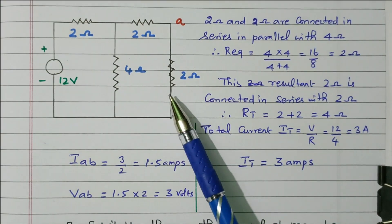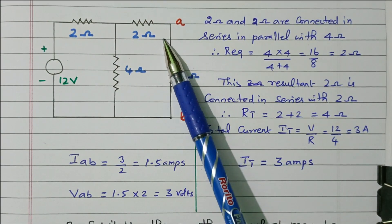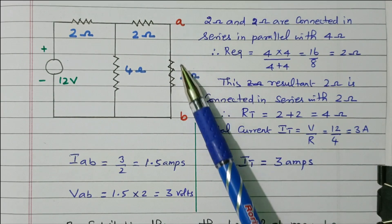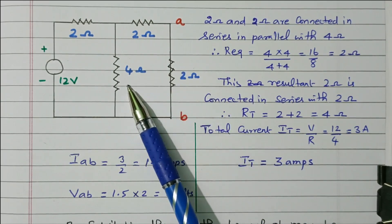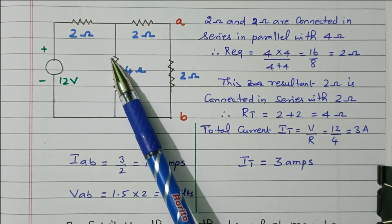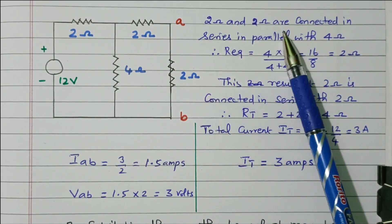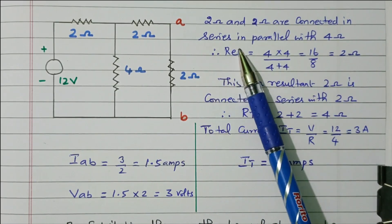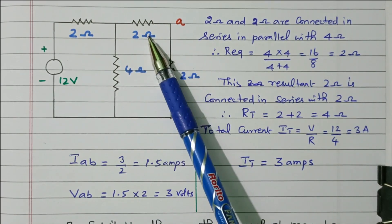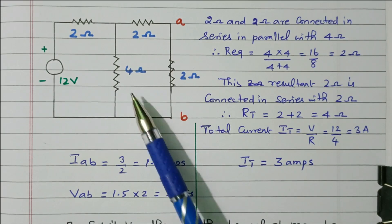So in order to find the current, we need to simplify the resistors. From this diagram, it is clear that these two are connected in series — this 2 ohm and 2 ohm are connected in series. That is in parallel with this 4 ohm, and that is connected in series with this 2 ohm. So 2 plus 2 equals 4, and that 4 ohm is connected in parallel with this 4 ohm.